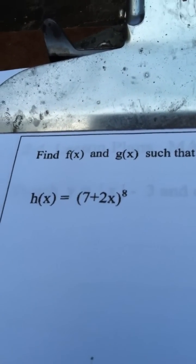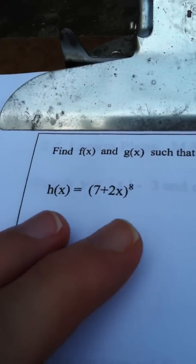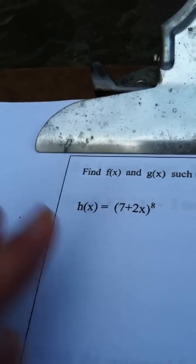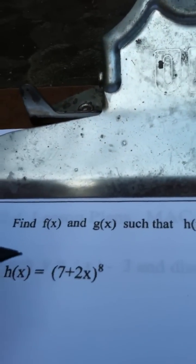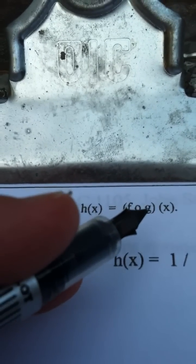So far in this section we've composed functions, now what we're going to do is we're going to look at an answer and we're going to figure out what two functions were composed to get that answer. So the way those directions will appear, find two functions f(x) and g(x) such that h(x) is f composed with g.